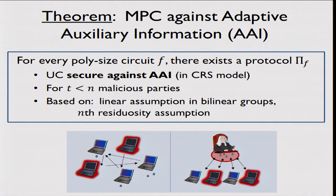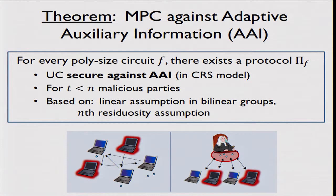Our primary theorem: for every poly-sized circuit F, we provide a protocol secure against adaptive auxiliary information under the definition described, achieving universal composability (UC) security — which is somewhat stronger — in the common random string model where everybody has access to shared randomness. Our protocol handles any number of malicious corruptions and is based on a collection of assumptions including the linear assumption in bilinear groups and N-th residuosity. We get many different trade-offs based on assumptions and properties; even going down to just DDH, we get meaningful results.